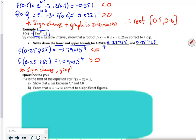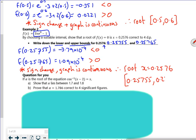And the graph is continuous. So if you graphed it, there'll be no asymptotes, continuous. So I've got a sign change. Therefore, the root lies within that interval.